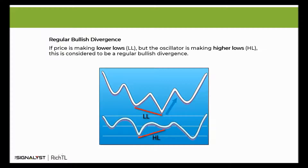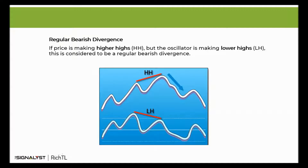There are two types of regular divergences: bullish and bearish. If price is making lower lows while the indicator is making higher lows, this is considered to be a regular bullish divergence. This usually occurs at the end of a downtrend. After establishing a second low, if the indicator fails to make a new low, it's likely that the price will rise, as price and momentum are usually expected to move in line with each other and in parallel.